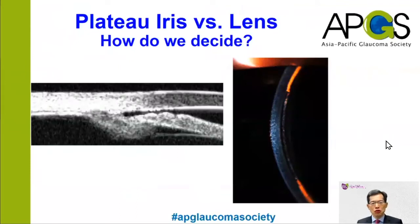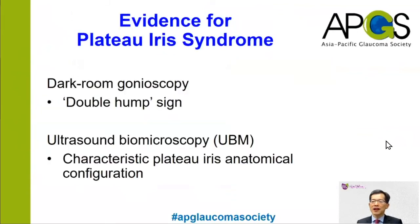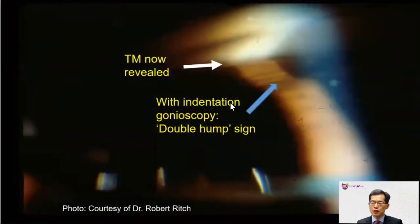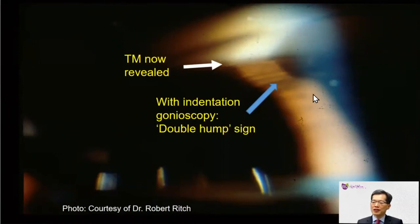How do we decide whether plateau iris configuration or the lens is the main contributing mechanism? First, let us look at the evidence for plateau iris syndrome. A very important sign is the double hump sign, which you can see during darkroom gonioscopy. UBM can also help us delineate the anatomical status in the anterior chamber. In this darkroom gonioscopy, you can see that no angle structures are visible after laser peripheral iridotomy, but when you apply indentation, the trabecular meshwork is revealed — this is appositional angle closure. With indentation gonioscopy you can also see the double hump sign: a first hump, then a valley, then a second hump.